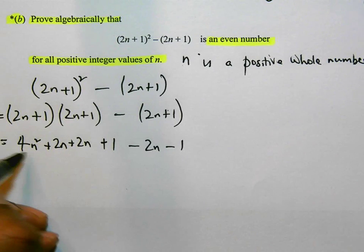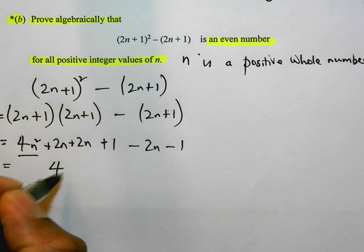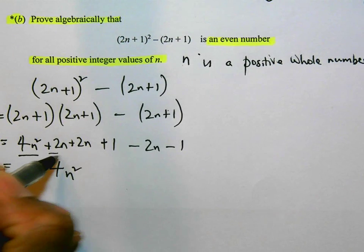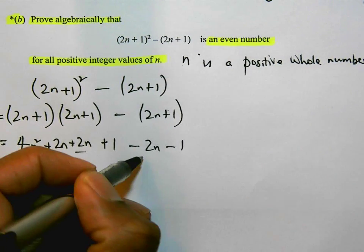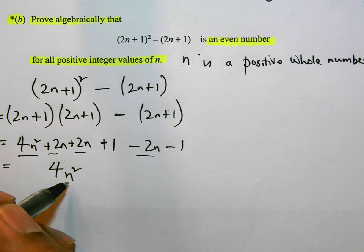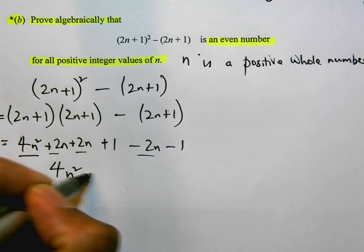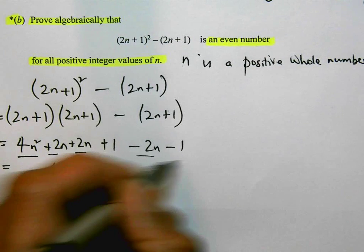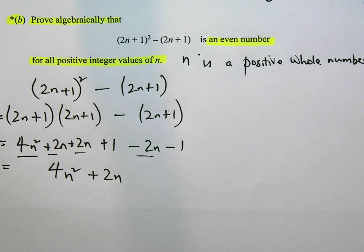n terms: I've got 2n plus 2n is 4n. 4n take away 2n is 2n. So that's positive 2n, plus 1 take away 1. They cancel each other out. They give you 0. So I'm just left with 4n² plus 2n.